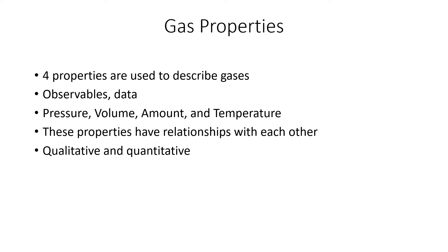We have four different properties that we use to describe gases. These are the observables — things you can collect data on, things that you can measure. Our four properties are pressure, volume, amount, and temperature. Each one of these properties has relationships with the other properties, and these relationships are both qualitative and quantitative. For us, we won't really worry about the quantitative relationships; we'll be focusing on the qualitative relationships.